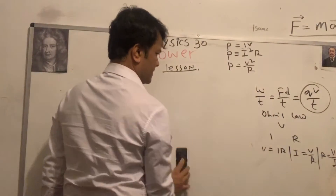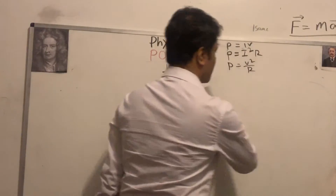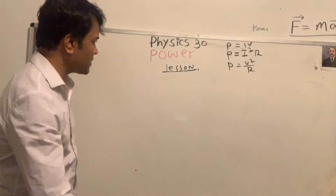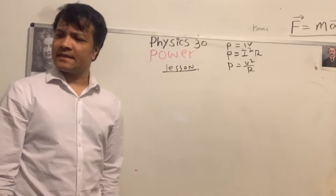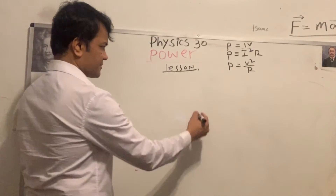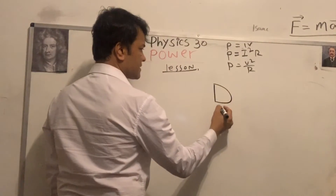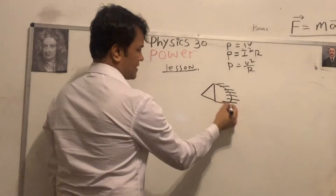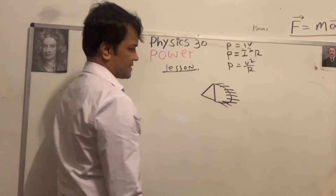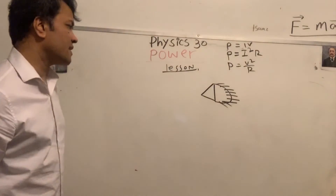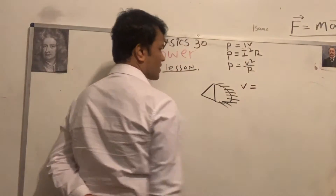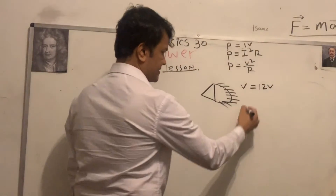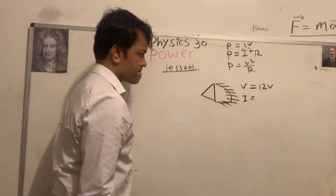Now let's solve a problem. Consider a car headlight — it has a voltage of 12 volts and a power of 40 watts. We want to find the resistance. We'll use P = V²/R.